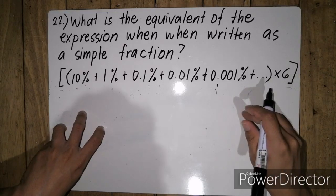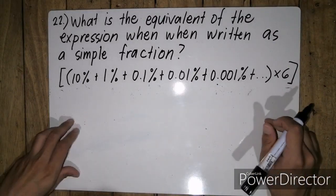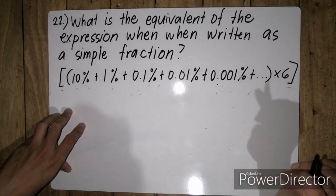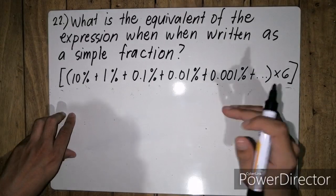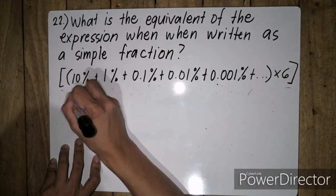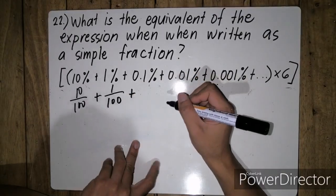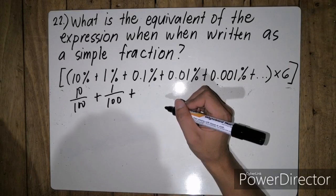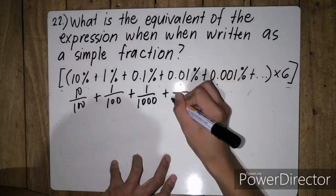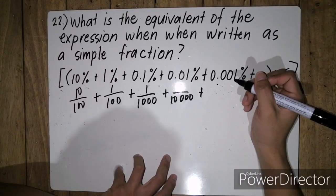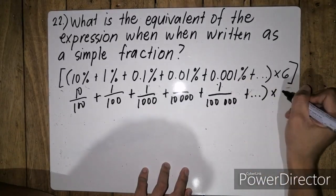For this particular problem, sasagutin lang muna natin kung paano natin isusulat ito as a single fraction. Para mas madaling natin masagutan, let us first convert our percentages into fractions. 10% is equivalent to 10 over 100. 1% is equivalent to 1 over 100. 0.1% is equivalent to 0.1 over 100, or pag nag-move tayo ng isang decimal, it will become 1 over 1,000. Plus 0.01% is simply 1 over 10,000. Plus 0.001% is simply 1 over 100,000. And so on, times 6.